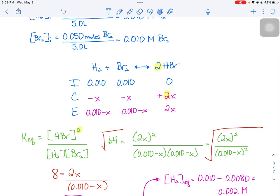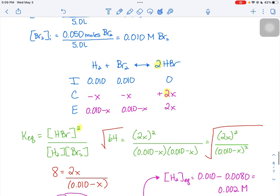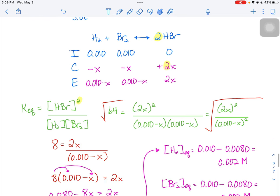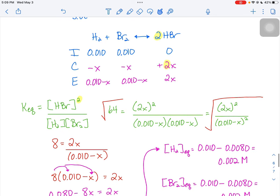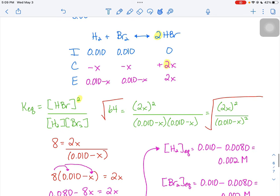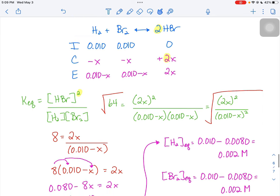If we take the square root of 64 on the left-hand side, that turns into just 8. And then the right-hand side now becomes just 2X over 0.010 minus X. A little bit of algebra.